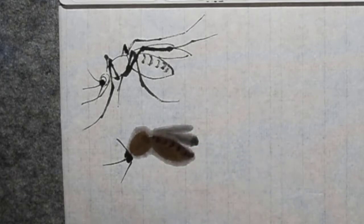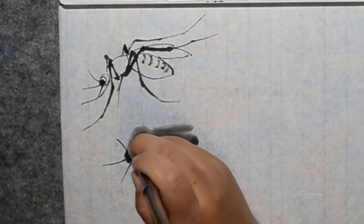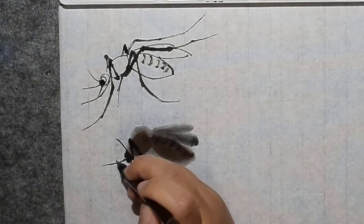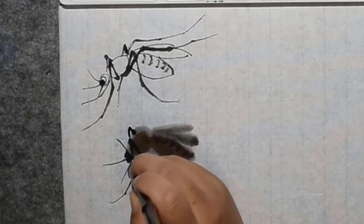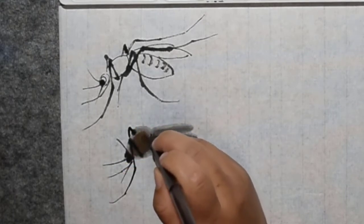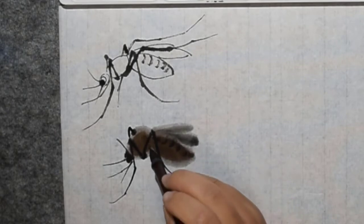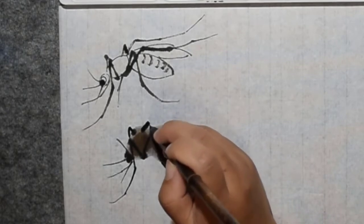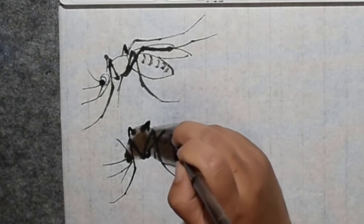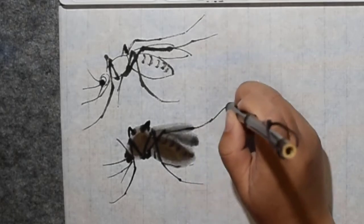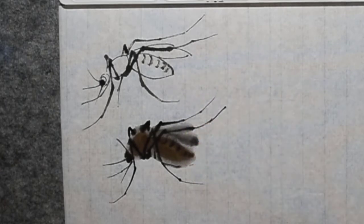Okay, now is the leg. Pure ink. One leg, okay, the other one. One, two, three, a leg. Okay, this is a mosquito. One leg. Okay, let's draw another one.